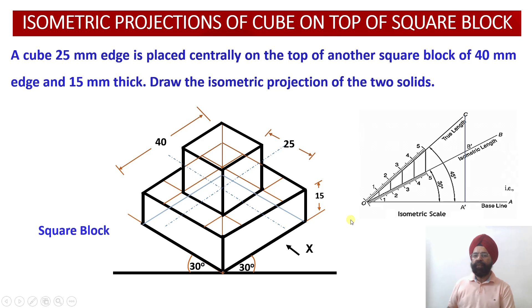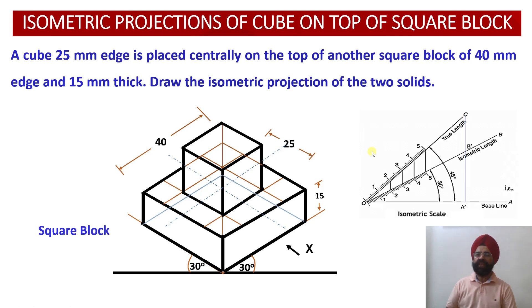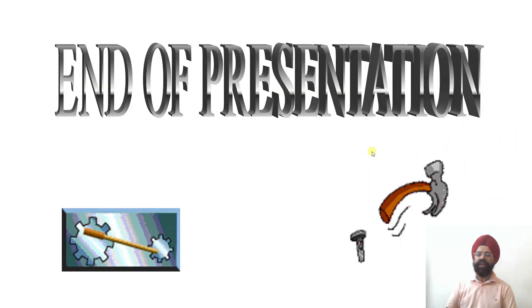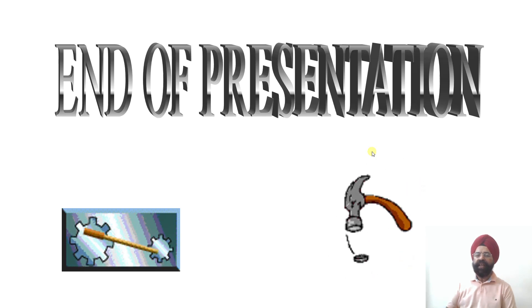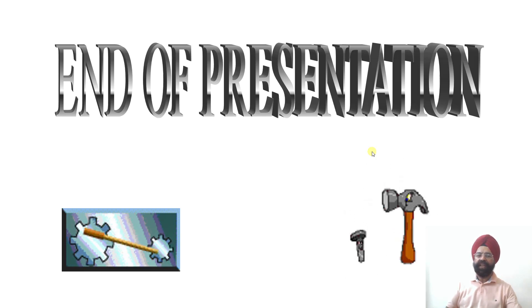The isometric projections of the combined solid show a cube having an edge of 25 mm placed centrally on top of a square block with dimension 40 mm and height 15 mm. This is how we carry out the construction of the isometric projections of a cube resting centrally on top of a square block. This is all for today — we will continue with more problems related to isometric projections of solids in the coming classes. Thank you very much.